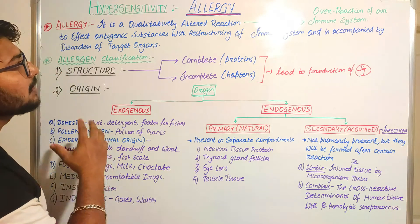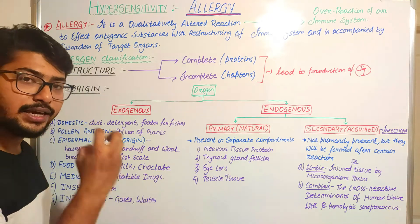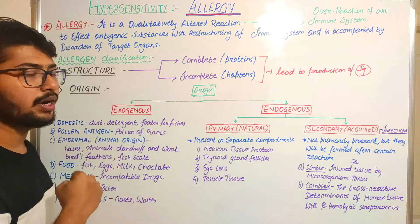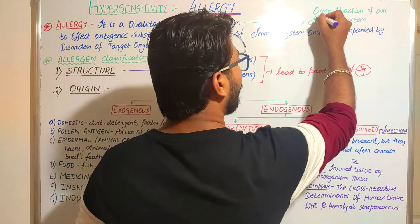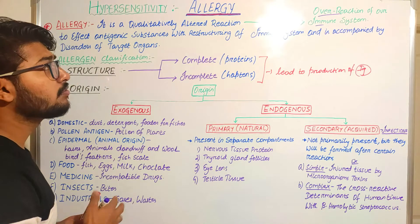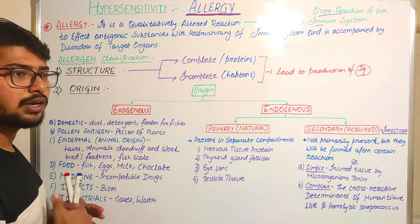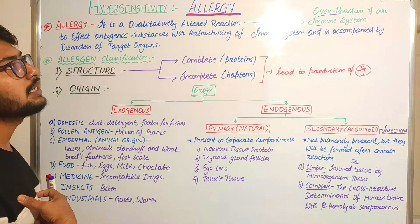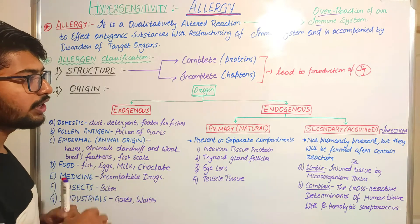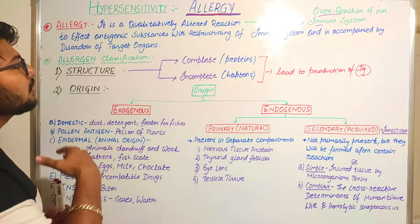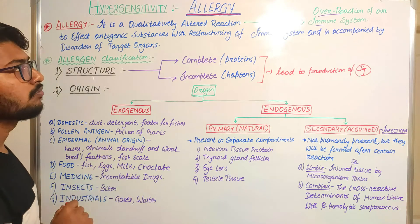What do you mean by allergy and hypersensitivity? Why is allergy known as a hypersensitivity reaction? Allergy is a reaction — an overreaction of our immune system. If irritation occurs in our body and our immune system overreacts in response, then we experience allergy. From basic knowledge we know that the things that cause allergy are called allergens.